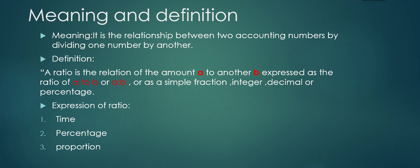The next form is percentage. In this form, a quotient is obtained by dividing one item by the other item, and after the resultant figure is multiplied by 100, it becomes a percentage. So when you multiply the resultant figure by 100, it will be expressed in the form of percentage.